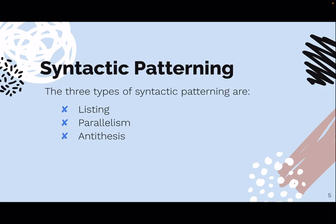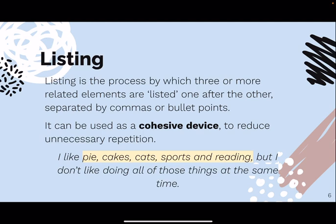The three types of syntactic patterning are listing, parallelism, and antithesis. Listing is the process by which three or more related elements are listed one after the other, separated by commas or bullet points in writing. It can be used as a cohesive device to reduce unnecessary repetition. For example: 'I like pie, cakes, cats, sports, and reading.' Without listing, you'd have to say 'I like pie and I like cakes and I like cats...' — which is very repetitive — so listing functions as a cohesive device.